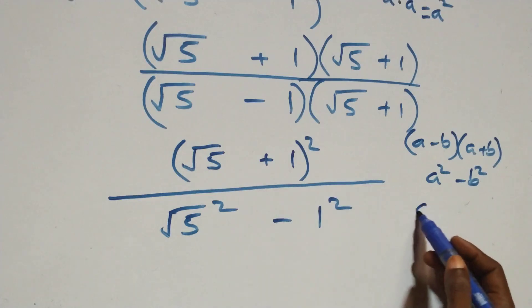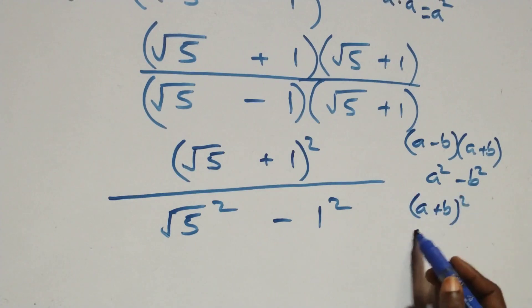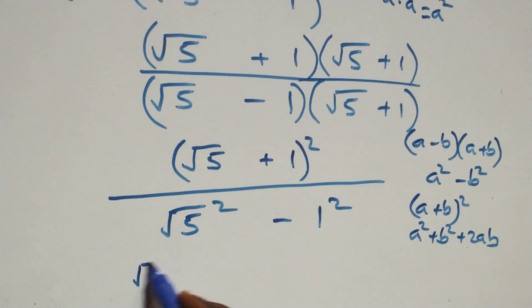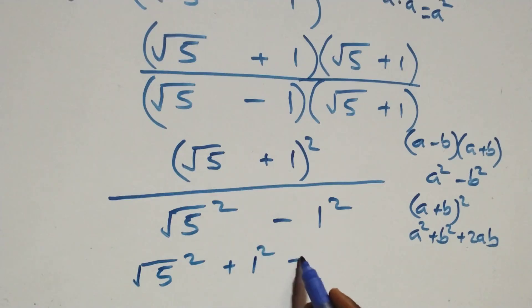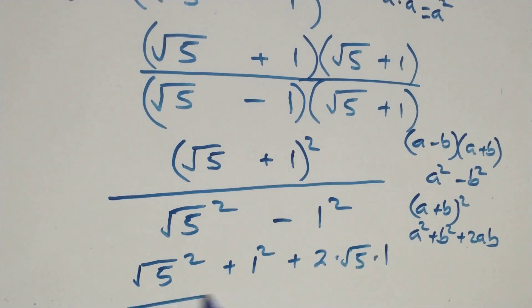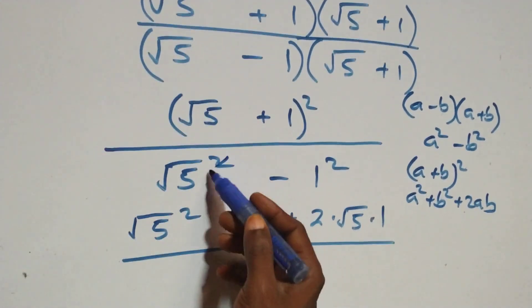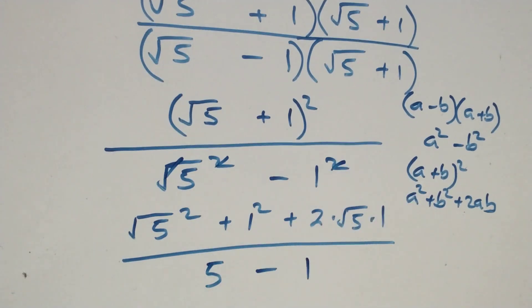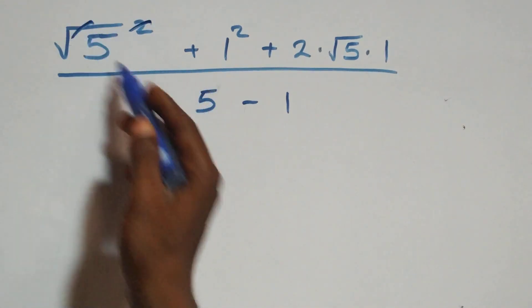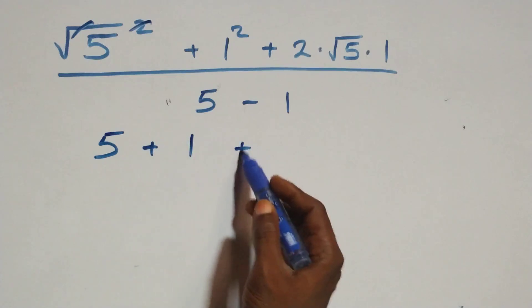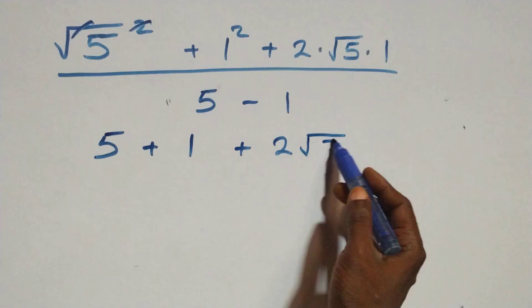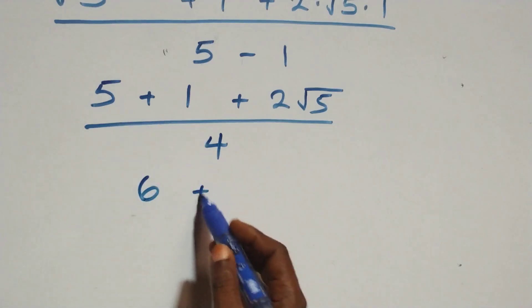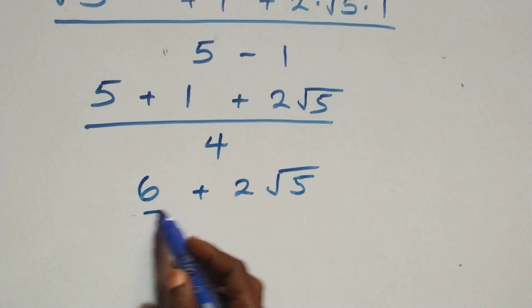For the numerator, we expand (√5 + 1)² using (a + b)² = a² + b² + 2ab. This gives us (√5)² + 1² + 2×√5×1, which equals 5 + 1 + 2√5 = 6 + 2√5. The denominator is 5 − 1 = 4, so we have (6 + 2√5) / 4.